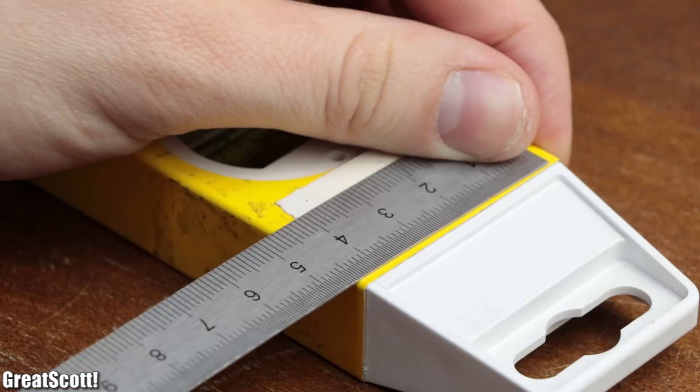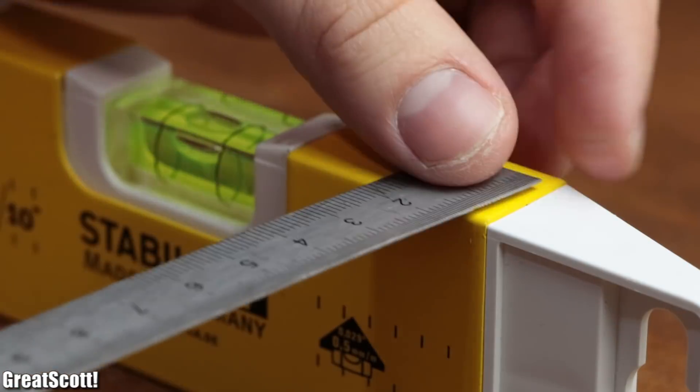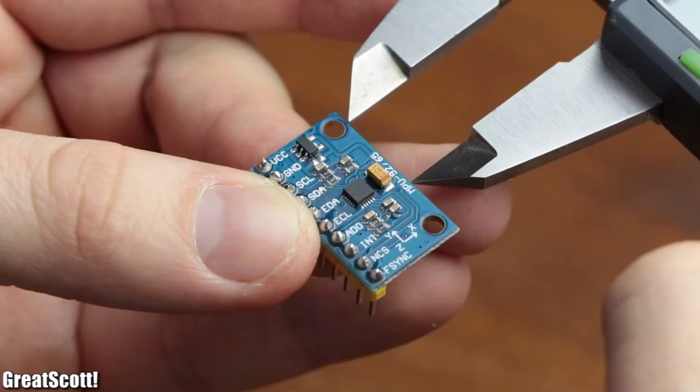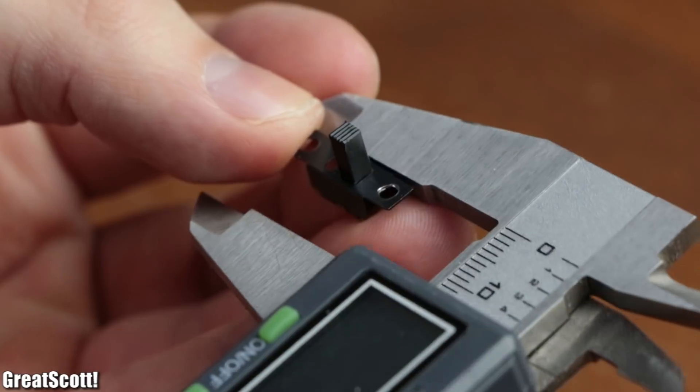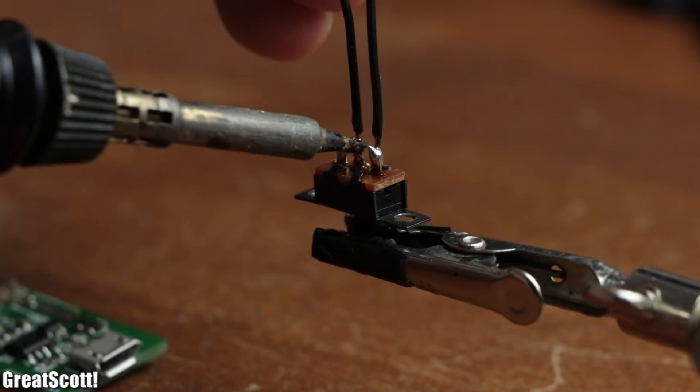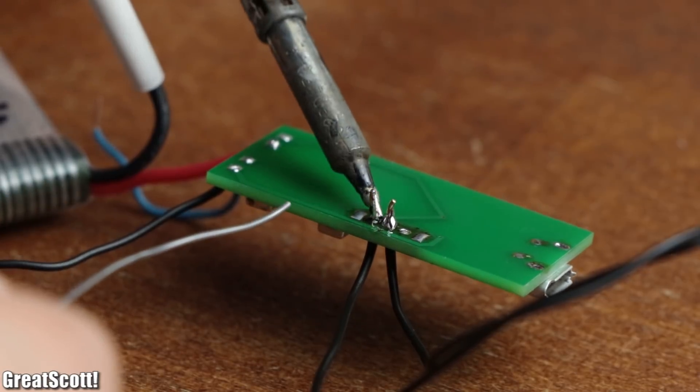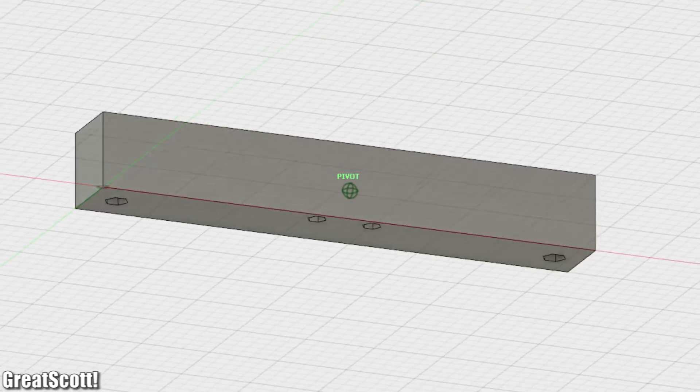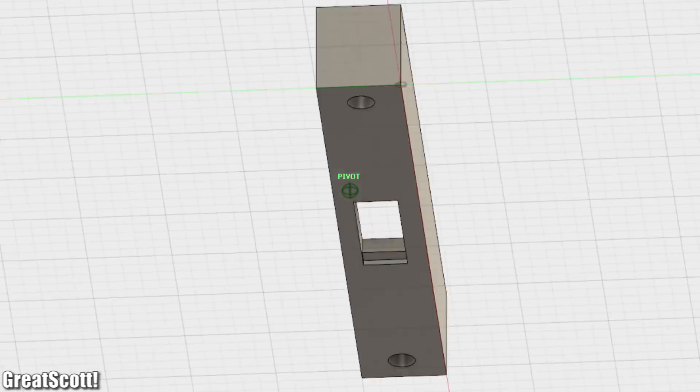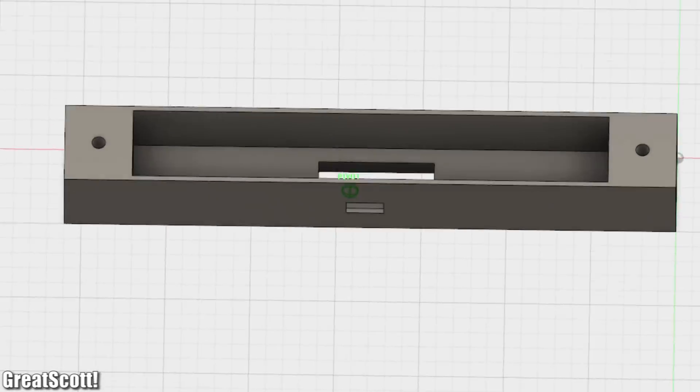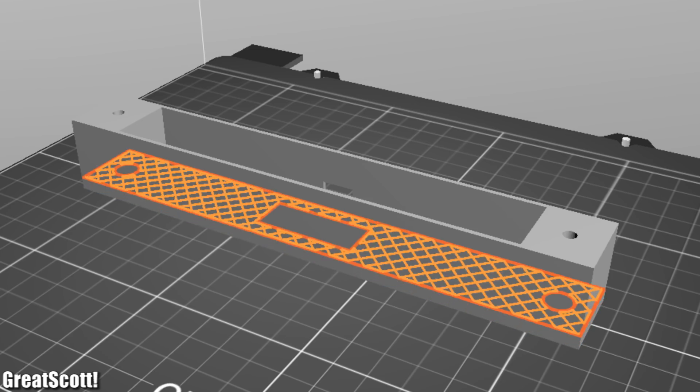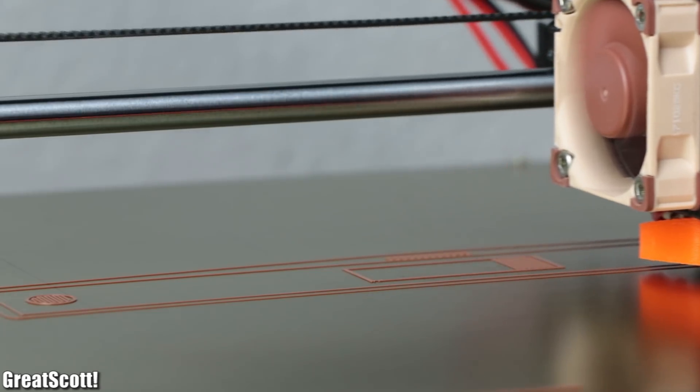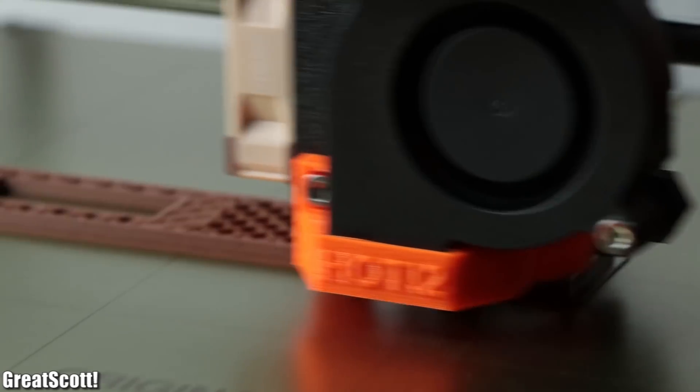So what I did next was measure the dimensions of a proper air bubble spirit level and the dimensions of all the required electrical components, including a small slide switch which will be connected to the battery circuit. With those measurements in mind, I then created the upper and lower parts of my DIY digital spirit level with Fusion 360. Afterwards, I sliced the models and 3D printed them with brown PLA filament, which took around 6 hours in total.